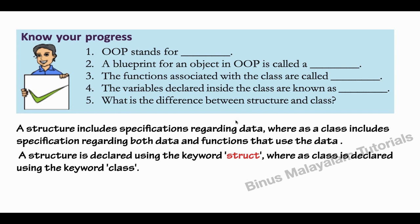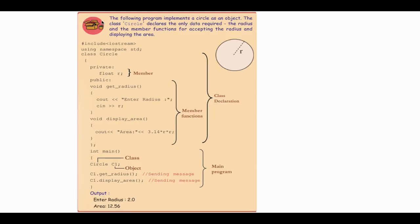In a structure, we are grouping data with information about its specifications. In a class, we group both data and functions. There are some basic differences between them. We are going to look at an example from the textbook and write a program in C++.